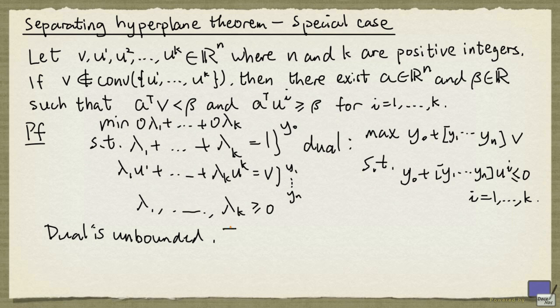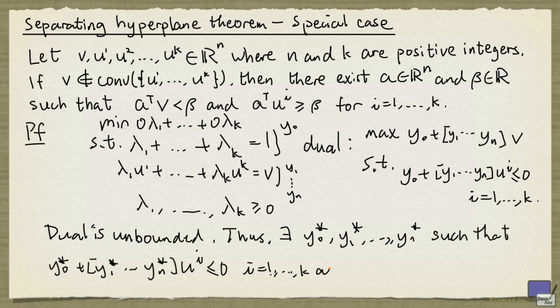And therefore, there exists y0 star, y1 star, up to yn star, satisfying all the constraints, and having a positive objective function value.